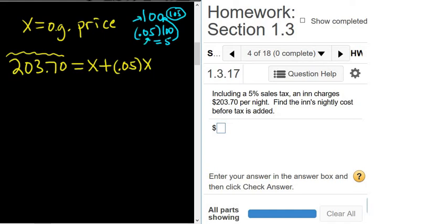The same thing is happening in this problem. We have the original price plus 5% of the original price. Notice there's a 1 here, so you can just add these. 1 plus 0.05 is 1.05, and then this carries down here: 203.70.